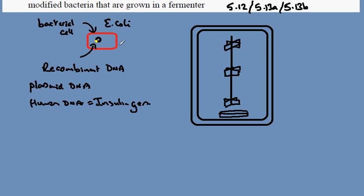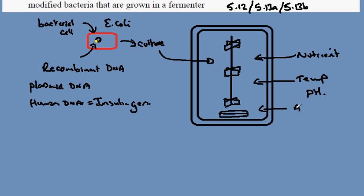A culture of this bacteria, that is a large population, will be injected into the fermenter. It will be necessary to provide this culture with nutrients and to control the temperature, pH, and the gases in this fermenting chamber.